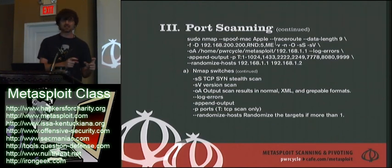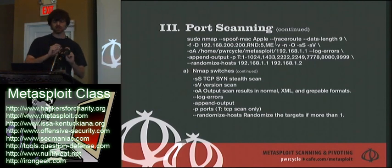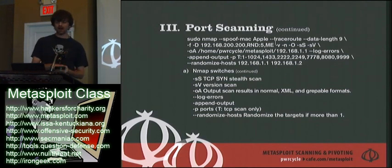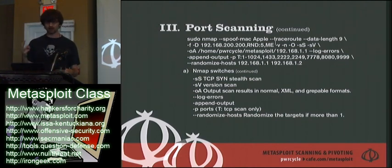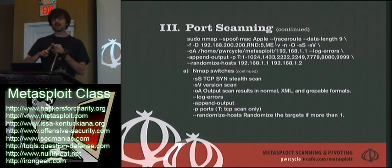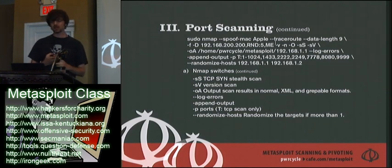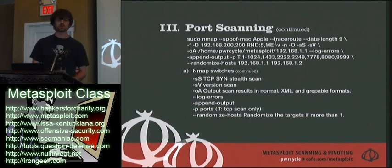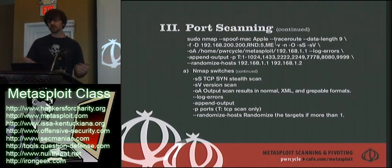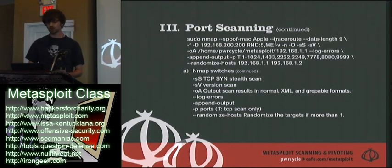Dash -oA: this is the output flag. It tells Nmap I want all of the output. There are three files that Nmap will create: one is .nmap, one is .gnmap, and one is .xml. The XML is the only file that Metasploit will import, so it's the one you care about most. I just always name the output file the IP address that I'm scanning.